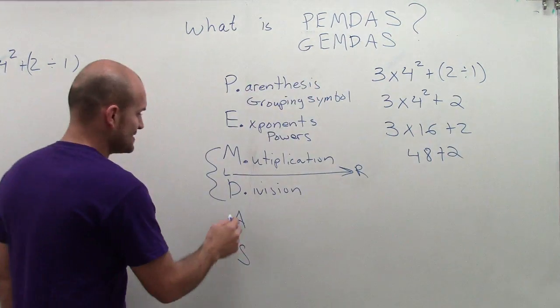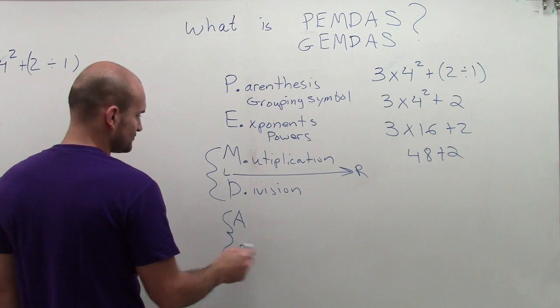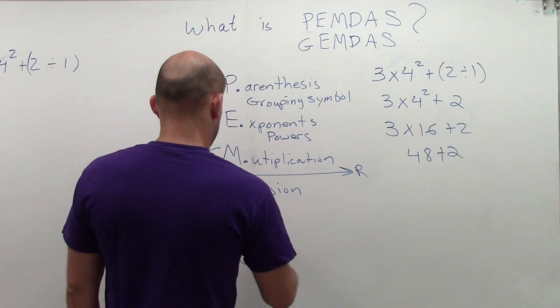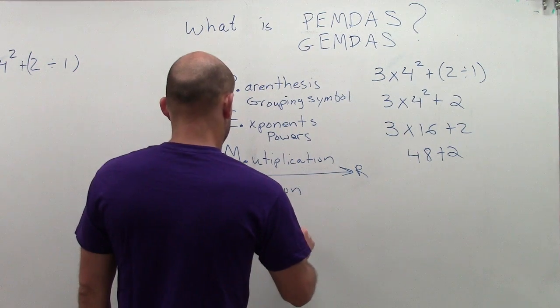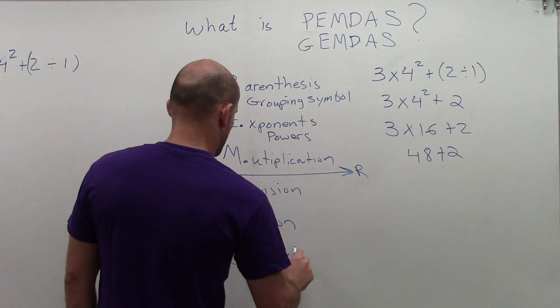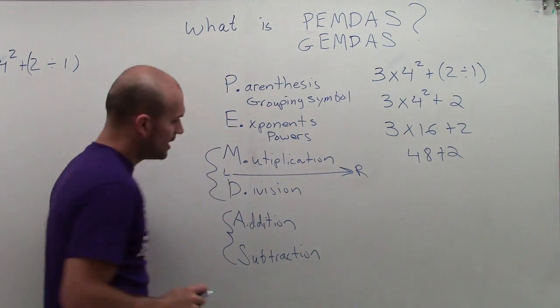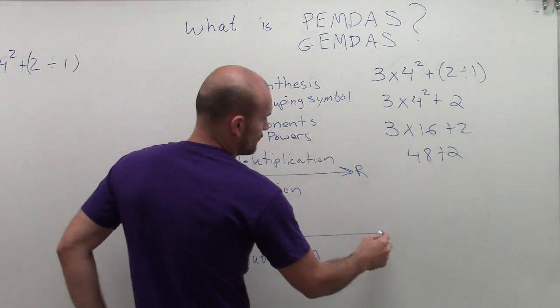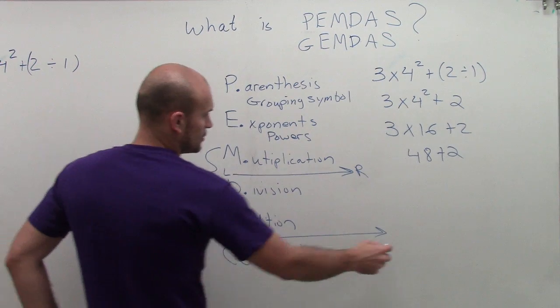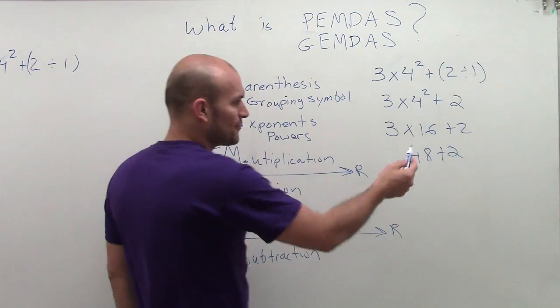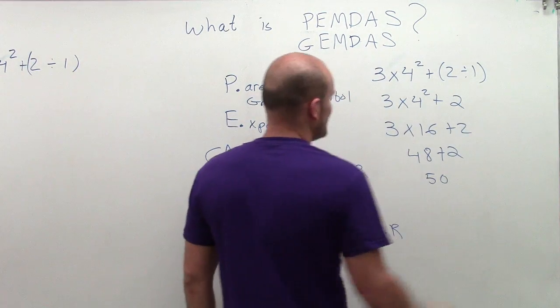And last, we have addition and subtraction. Addition and subtraction work the exact same way. We need to make sure we go from left to right. So obviously, I only have one addition problem here. So it's not too bad. 48 plus 2 is going to end up giving me 50.